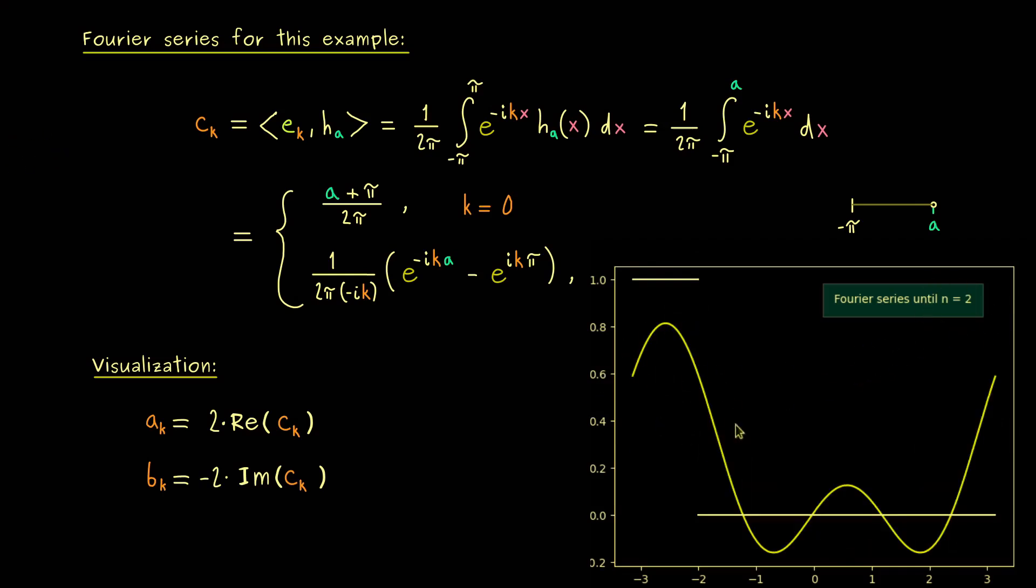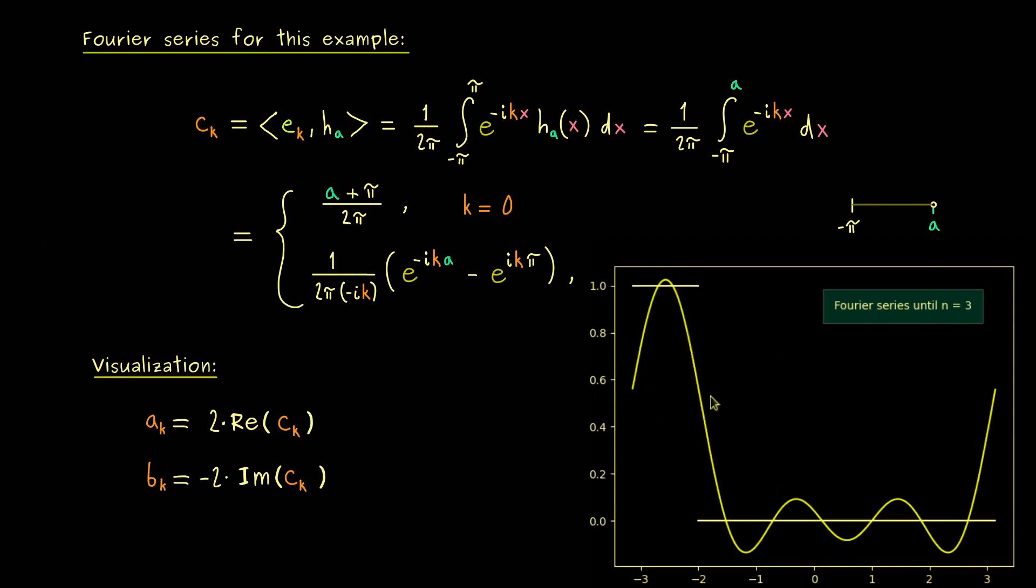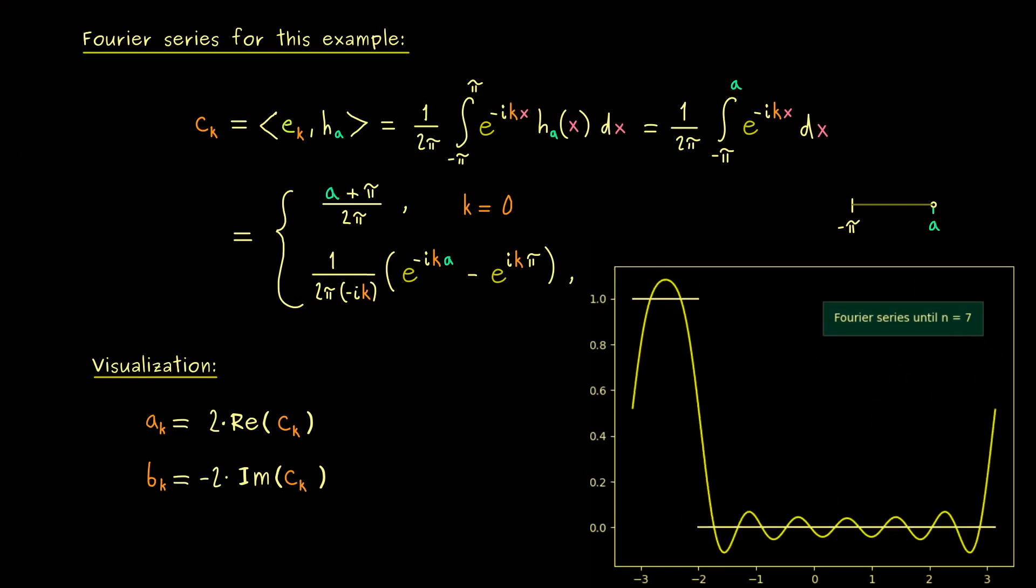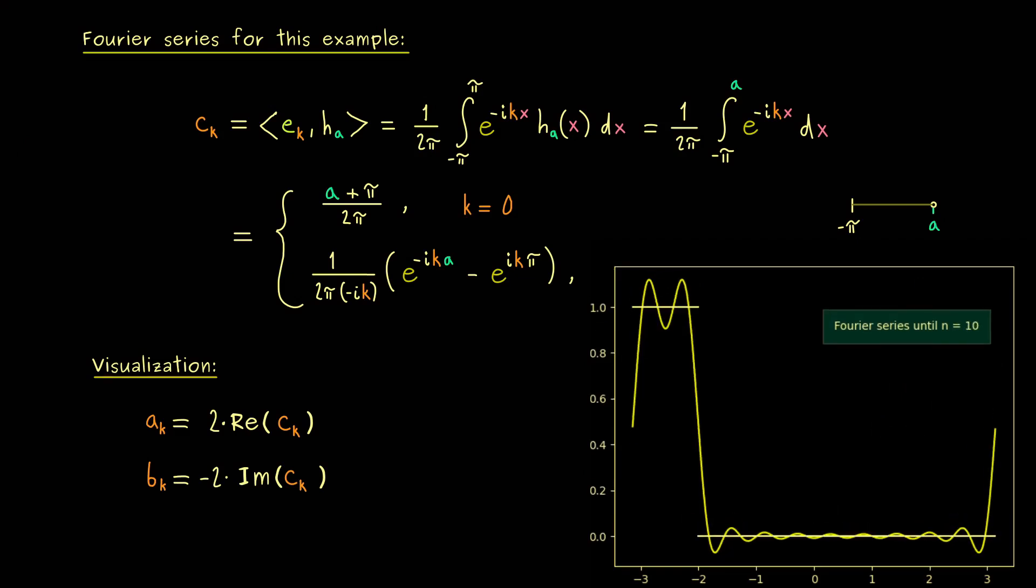if we increase the order of the Fourier series, we can get higher and higher here. So already at n is equal to three, we have something that represents our step function more or less. So let's just increase our n step by step. This is already very good, because everything looks correct.